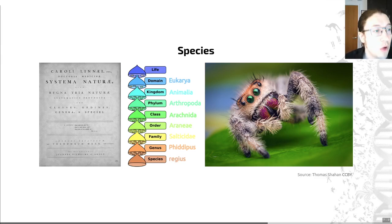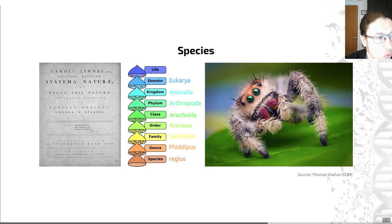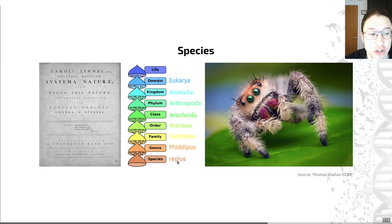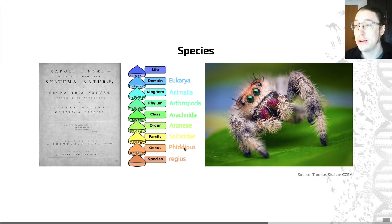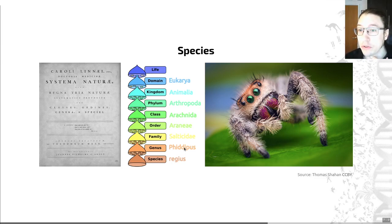A fine example of this hierarchical organization is this jumping spider on the right-hand side here, a member of the species Philippus Regius. Regius defines the species; Philippus is the genus to which it belongs — that's its binomial name. We'll go into species concepts in more detail in the next slide.